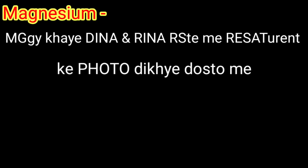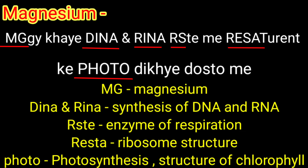Fifth, magnesium. It activates the enzymes of respiration and photosynthesis, and is involved in the synthesis of DNA and RNA. Magnesium is a constituent of the ring structure of chlorophyll and helps to maintain ribosome structure. The trick is: 'Maggi khaye dina and rina, raste mein restaurant ke photo dika, dosto mein.' Mg denotes magnesium, dina and rina denote synthesis of DNA and RNA, RES denotes enzyme of respiration, RESAT denotes ribosome structure, and the photo part denotes photosynthesis and structure of chlorophyll.